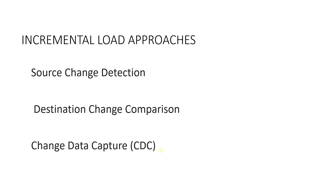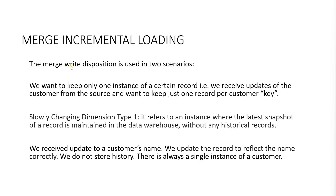Today we'll cover the source change detection. In the source change detection design pattern, we use a column — either a timestamp or an auto-incrementing ID — to detect changes. DLT refers to this as the merge write disposition. The merge write disposition is used in two scenarios. First, if we want to keep only one instance of a certain record.